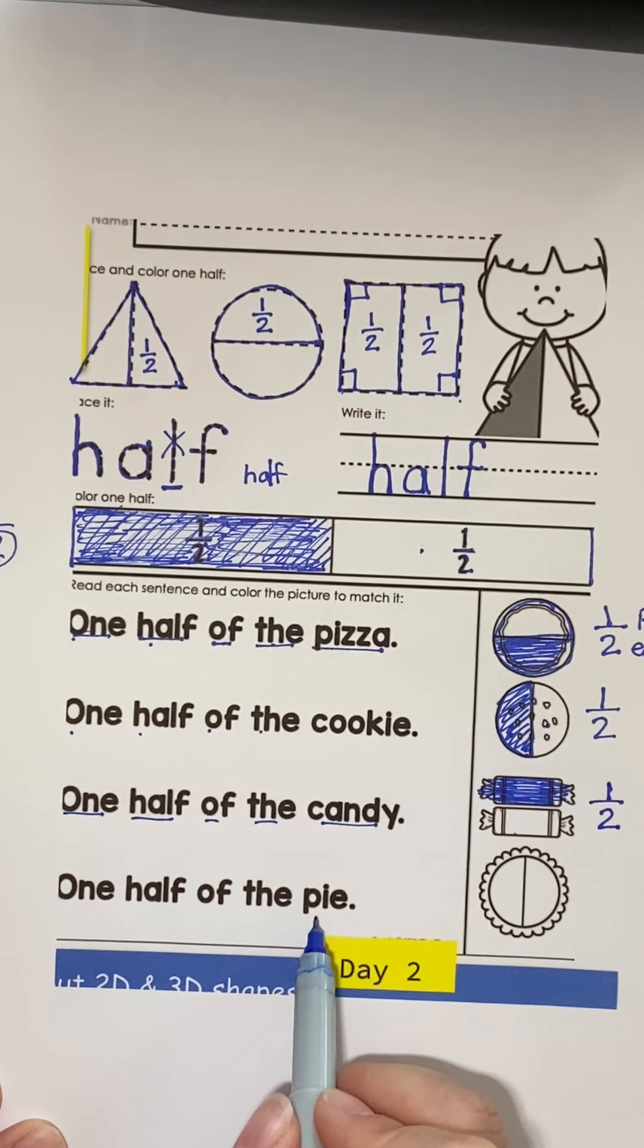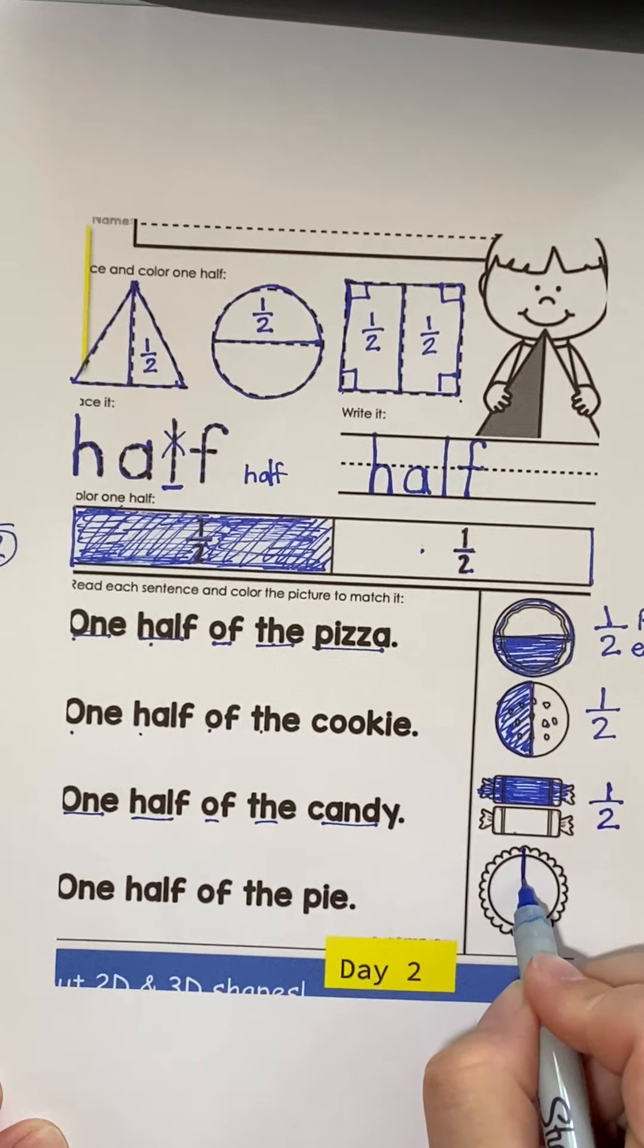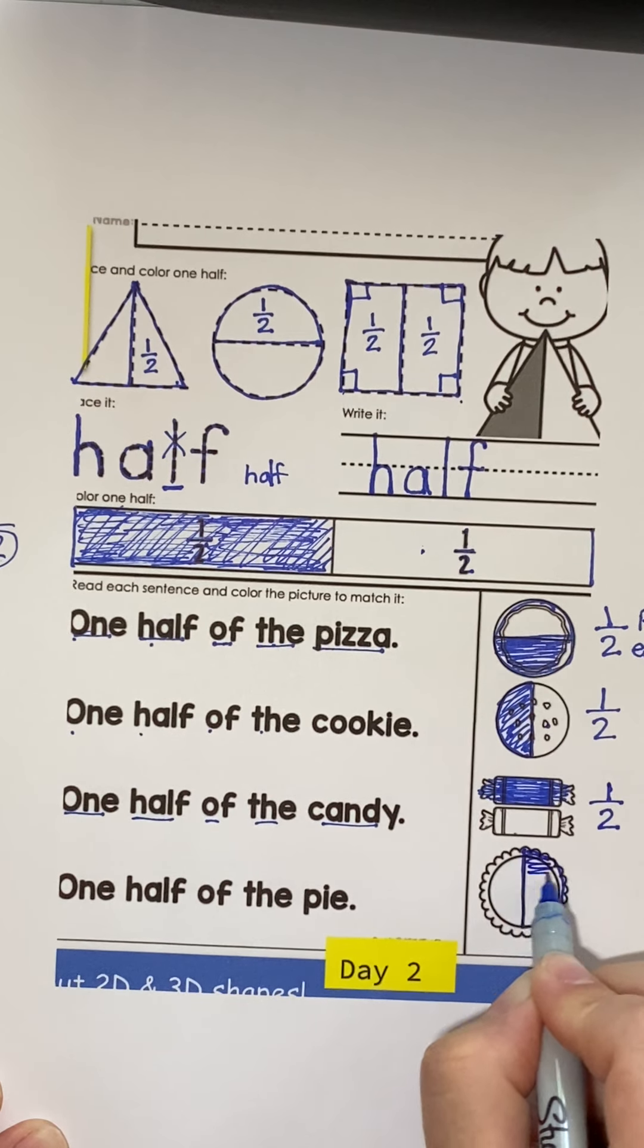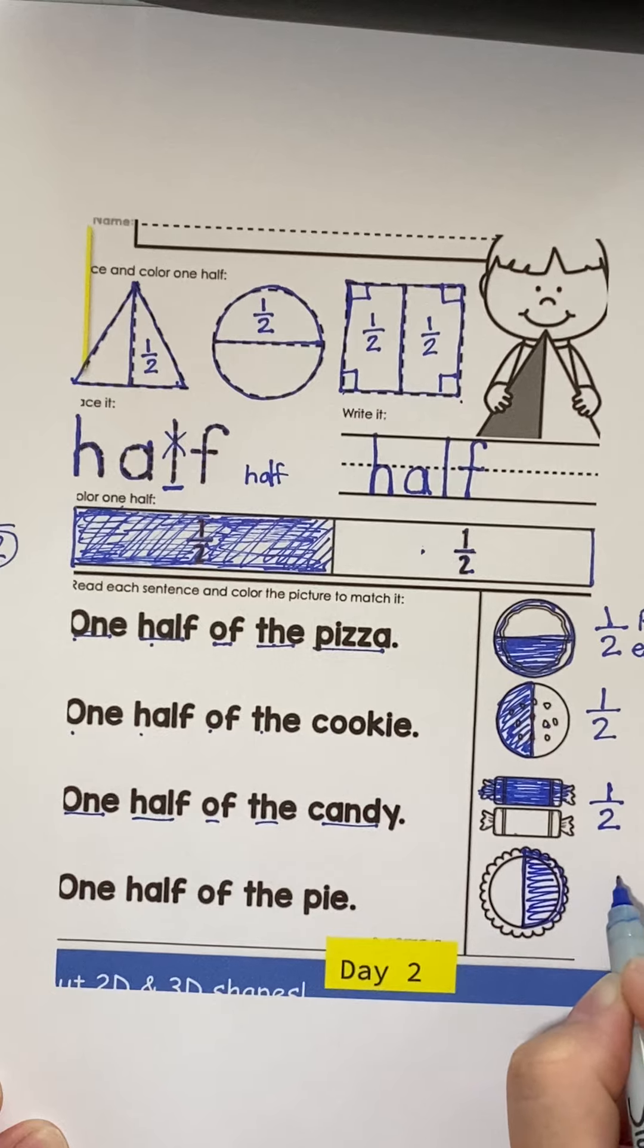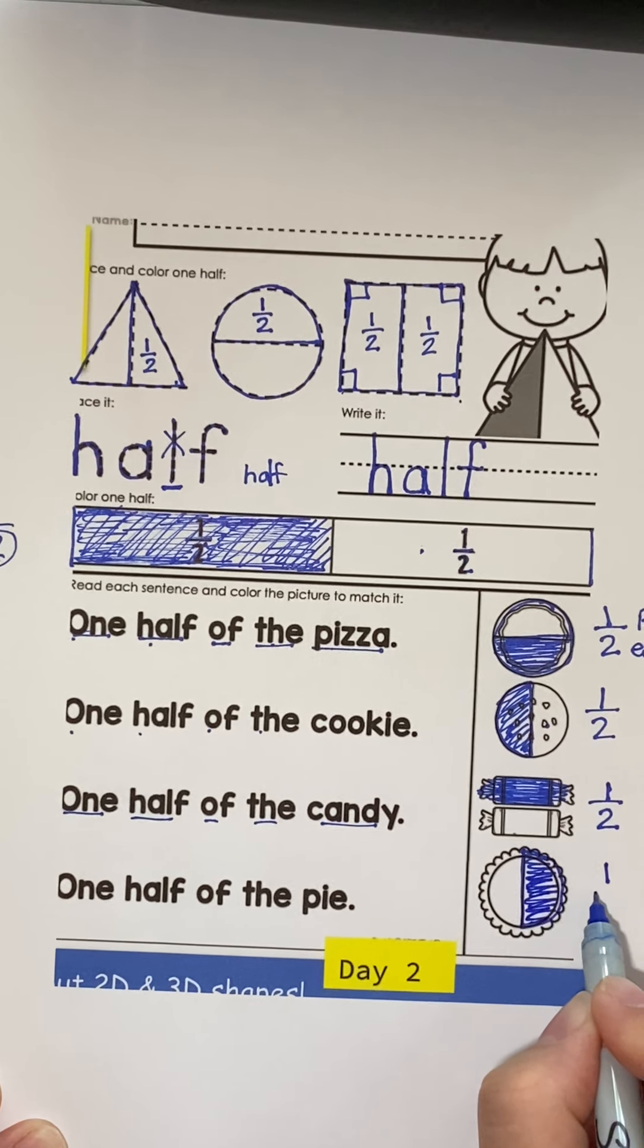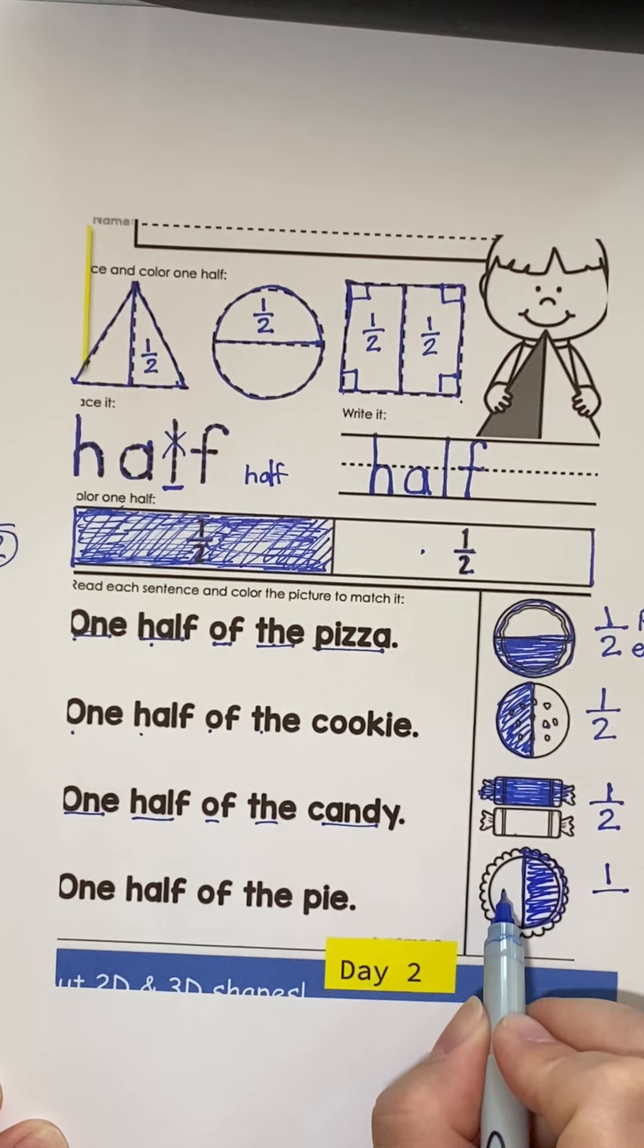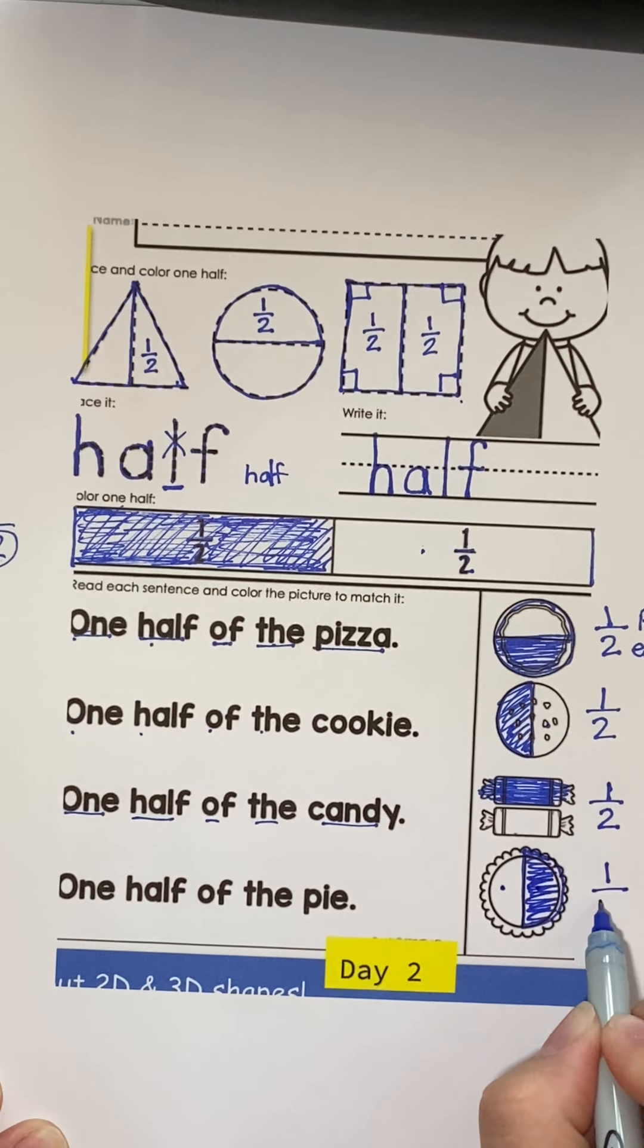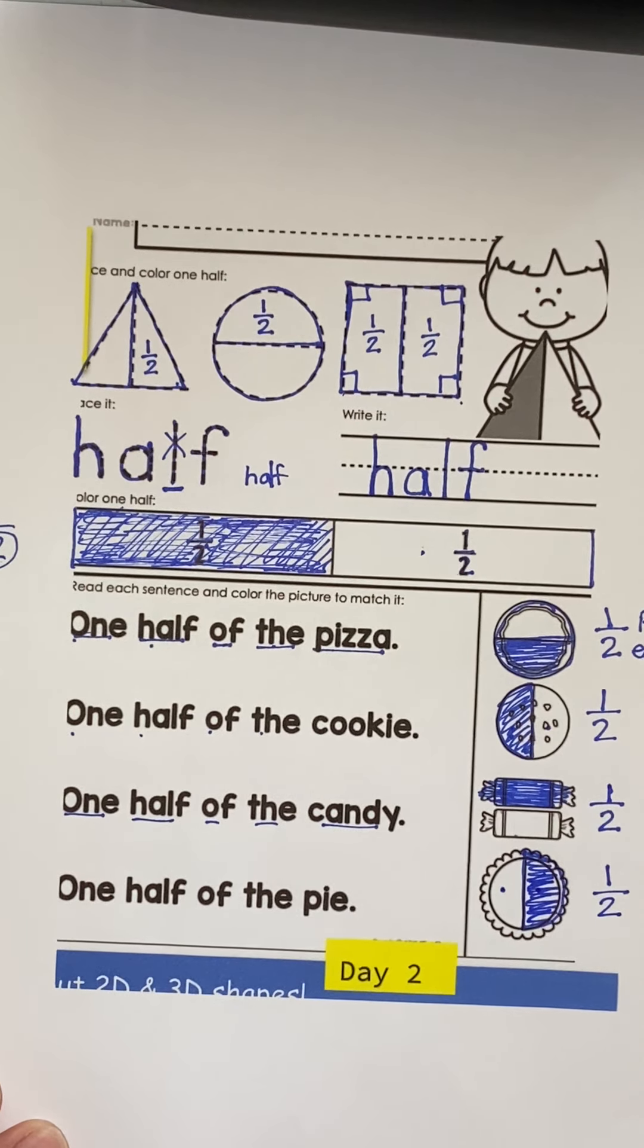One half of the pie. If I'm going to color in half of the pie, one half would be for my friend, and we still have one, two equal parts.